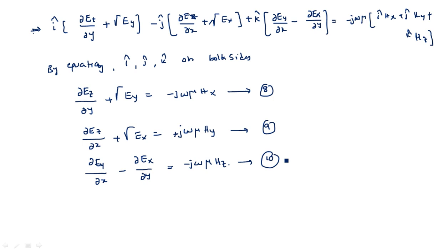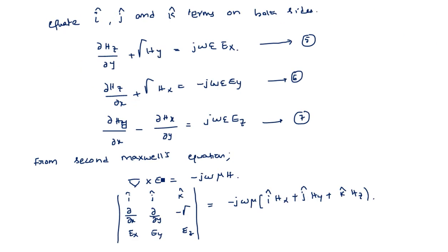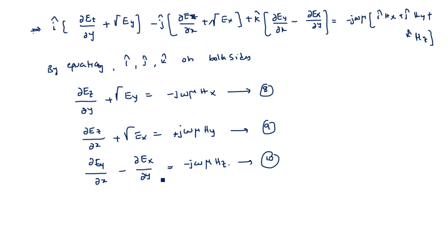Now, to calculate Ex, Ey, Hx, and Hy — our four required parameters — we need to manipulate these first three equations with the next three equations. We have six equations total, and by manipulating them we will get Ex, Ey, Hx, and Hy. I will do this calculation in the next video. Thank you.